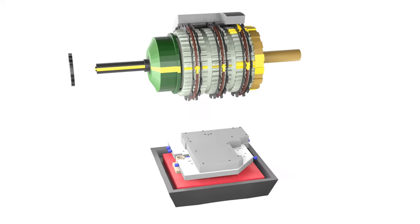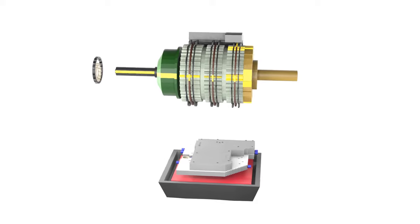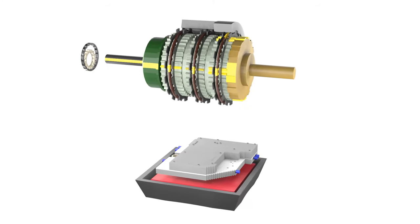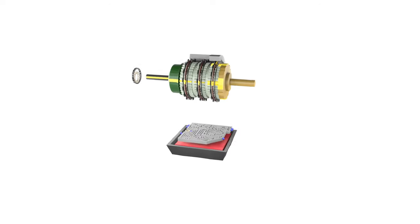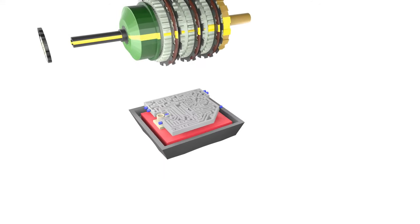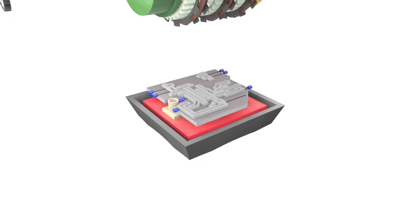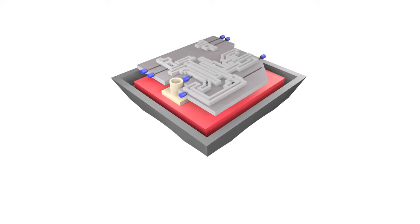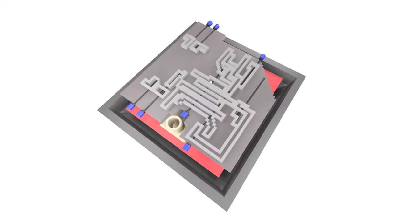We now have all the working components to demonstrate how the hydraulic system works in an automatic transmission. In this video we'll focus only on the path the fluid takes when engaging with clutch packs. This will leave out some paths that are not directly related to the path of clutches.